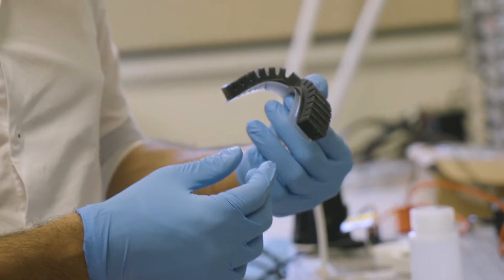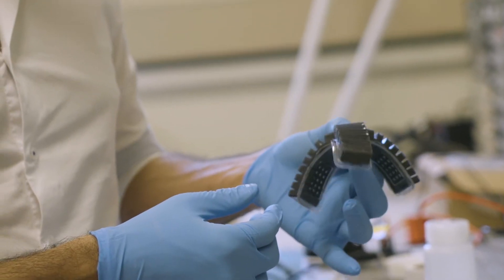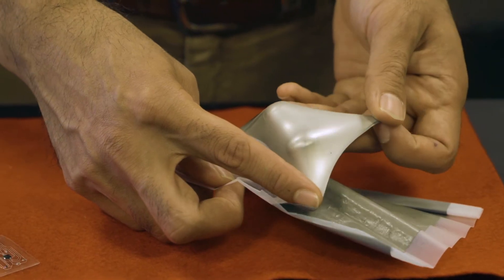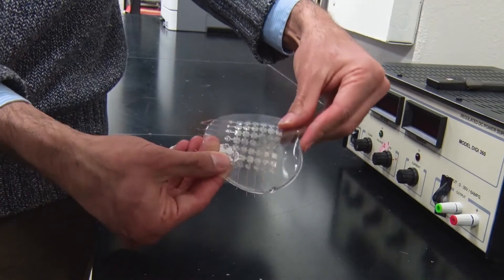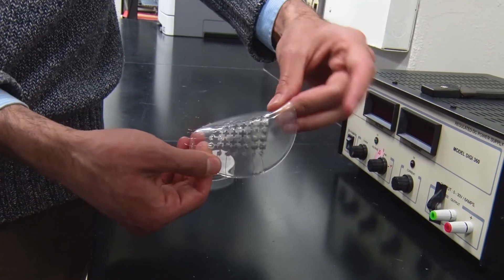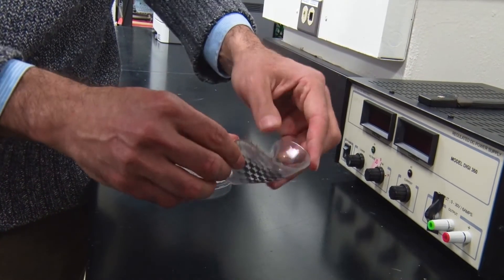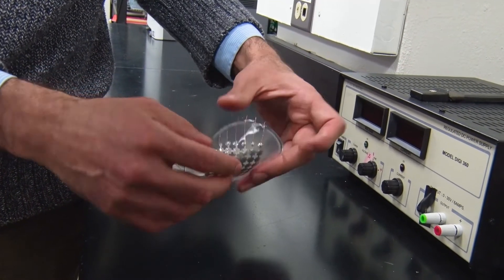My group has been working on engineering new types of materials that are soft and stretchable and could be used for applications in wearable computing and also machines and robots that can physically interact with humans. These are materials that could operate like artificial muscle or materials that can reconfigure their shape and their stiffness.